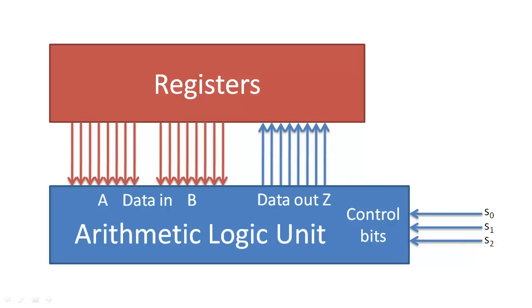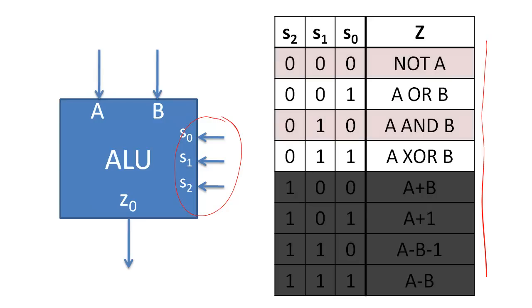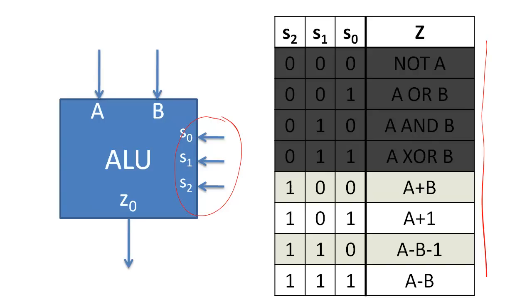Suppose now that we want to implement an ALU that receives 3 control bits and executes 8 operations. I have designed this ALU so that when S2 is 0, we select to execute 1 of 4 logic operations, and when S2 is 1, we select to execute 1 of 4 arithmetic operations.